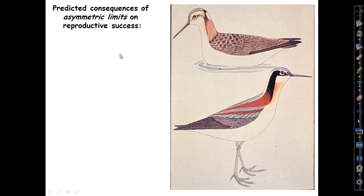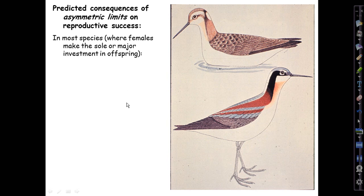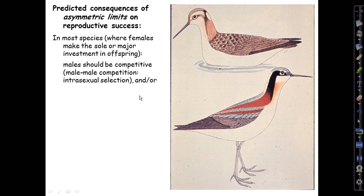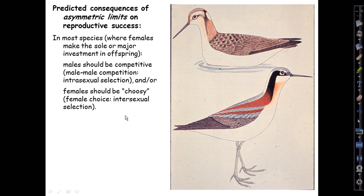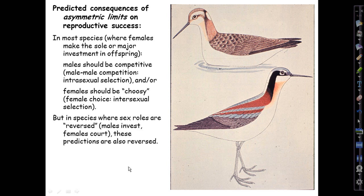The predicted consequences of asymmetric limits on reproductive success are that in most species where females make the sole or major investment in offspring, males should be competitive — either in direct male-male competition (intrasexual selection) or females should be choosy, giving rise to female choice or intersexual selection. But in species where sex roles are reversed — as in this American phalarope, where males do the investment — females do the courting, and the predictions are reversed. Females end up more aggressive, more brightly colored, and a bit larger.